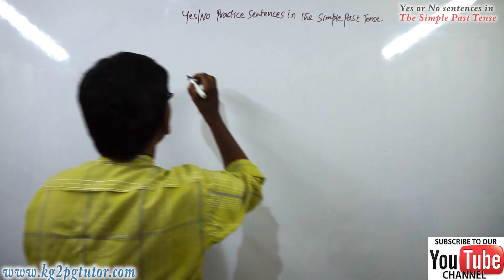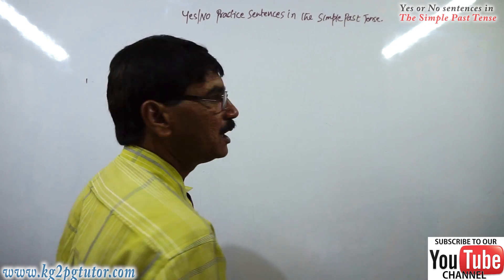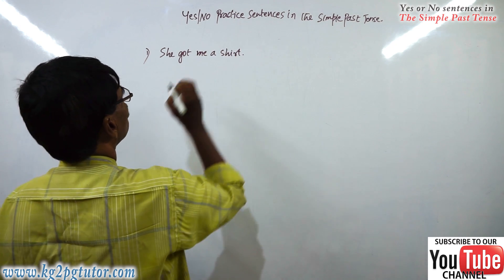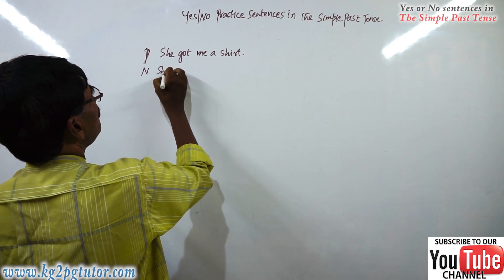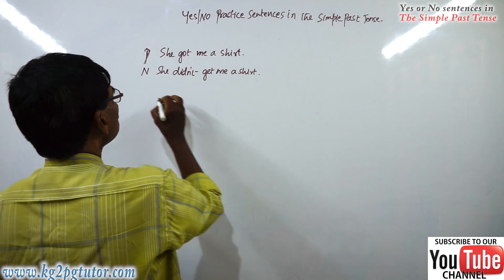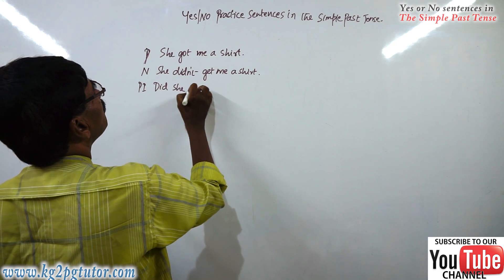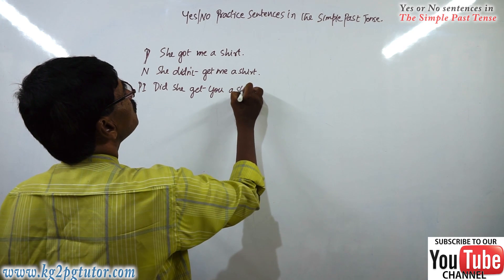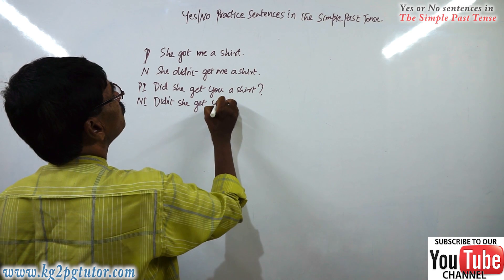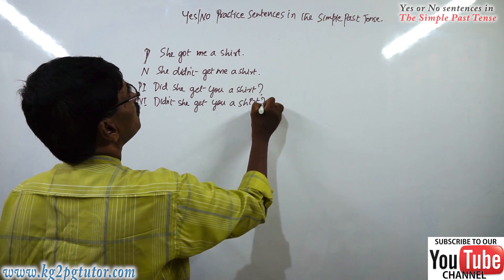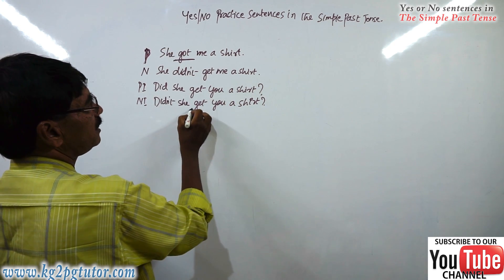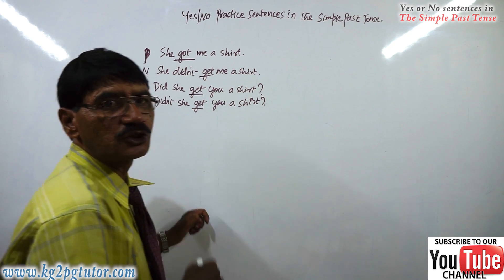I'll write one example for you. The example is: positive — 'She got me a shirt.' Negative — 'She didn't get me a shirt.' Positive interrogative — 'Did she get you a shirt?' Negative interrogative — 'Didn't she get you a shirt?' Here you need to observe: we use the past tense verb for the positive sentence only. In the other three sentences, you see the present tense verb. You need to be a little more careful there.